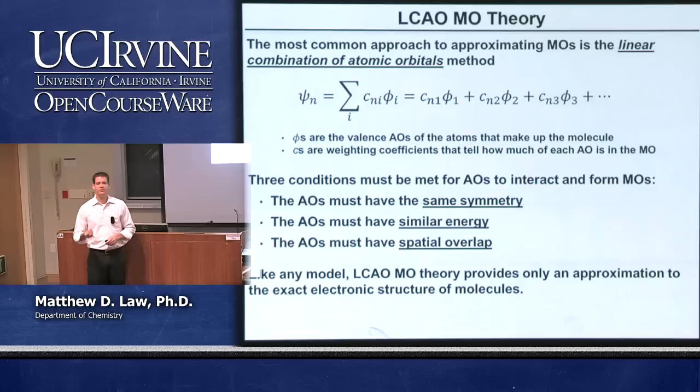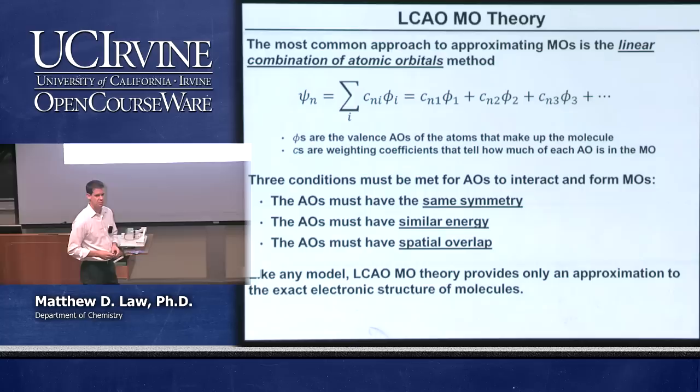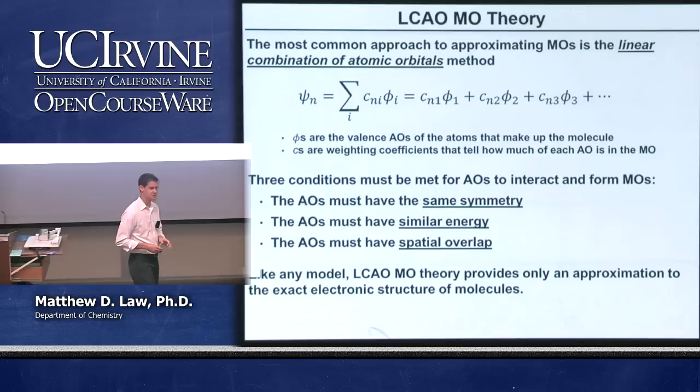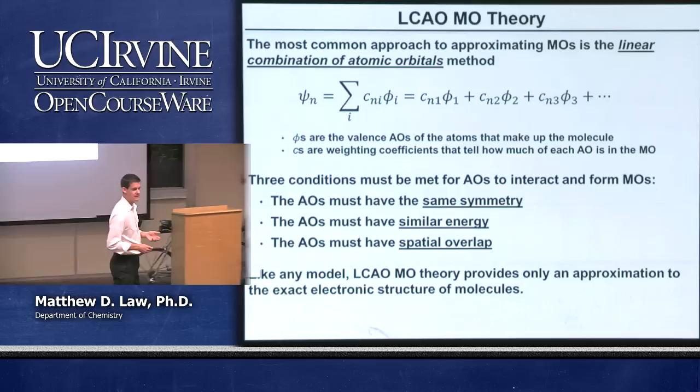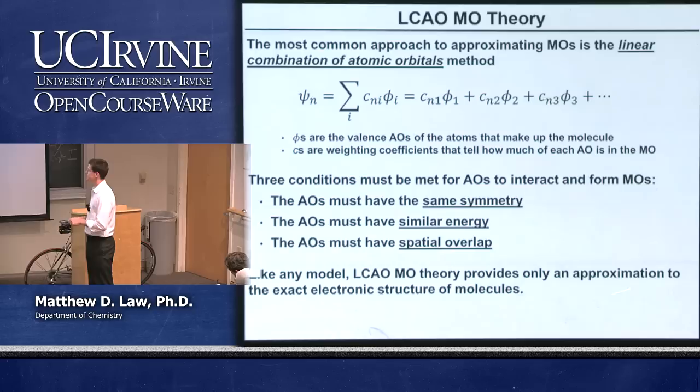One thing to keep in mind: molecular orbital theory is an incredibly powerful concept — very widely applied and successful — but it's an approximation to the reality of the situation. Any electronic model like this is going to be an approximation. LCAO-MO theory is similarly an approximation to the exact electronic structure of the molecule, which is actually quite difficult to calculate.